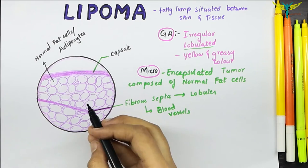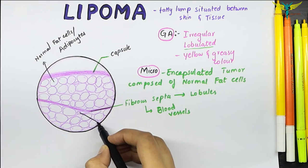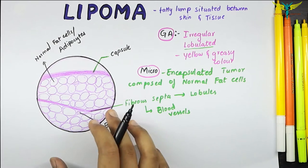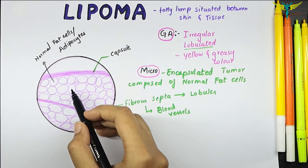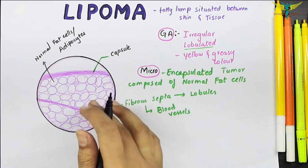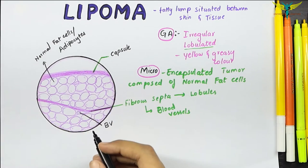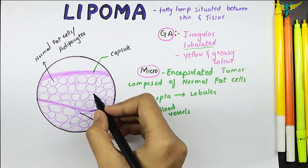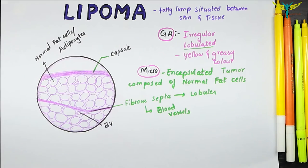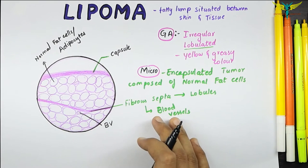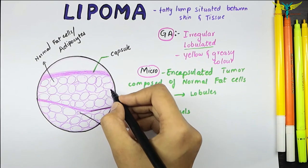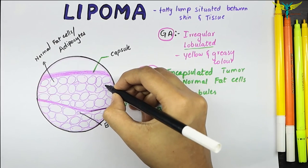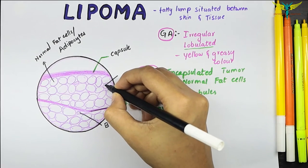You can note the blood vessels within the fibrous septa. The adipocytes themselves are small round cells with clear cytoplasm and peripherally pushed flat nuclei. Here you can see the flat nucleus pushed to the periphery of the cell.